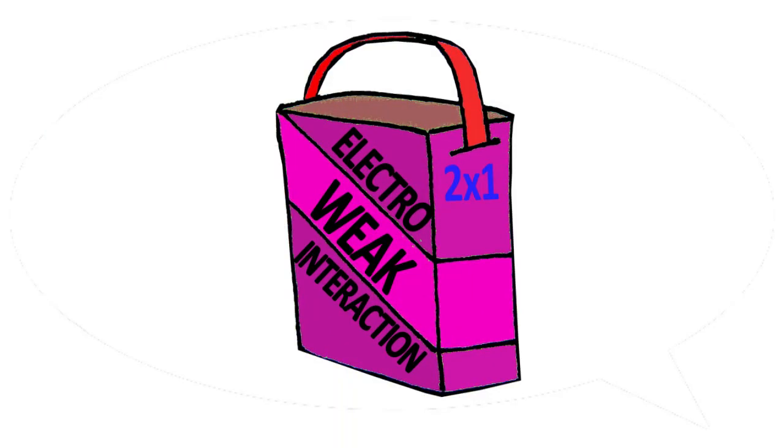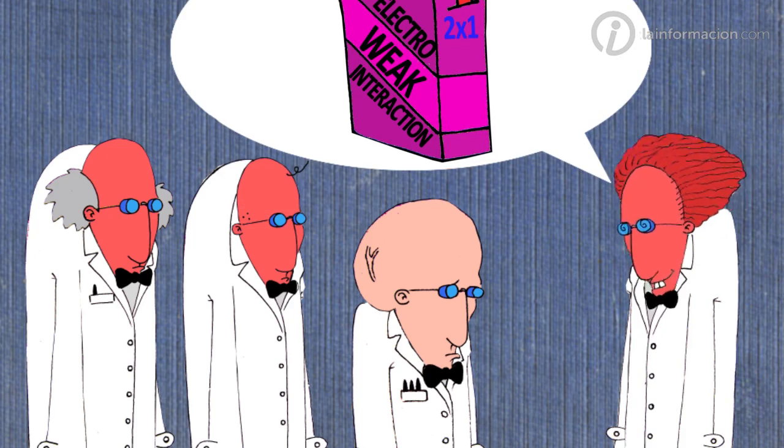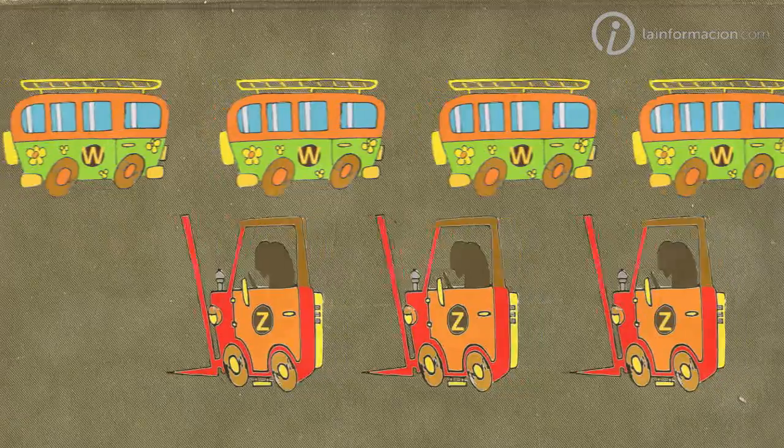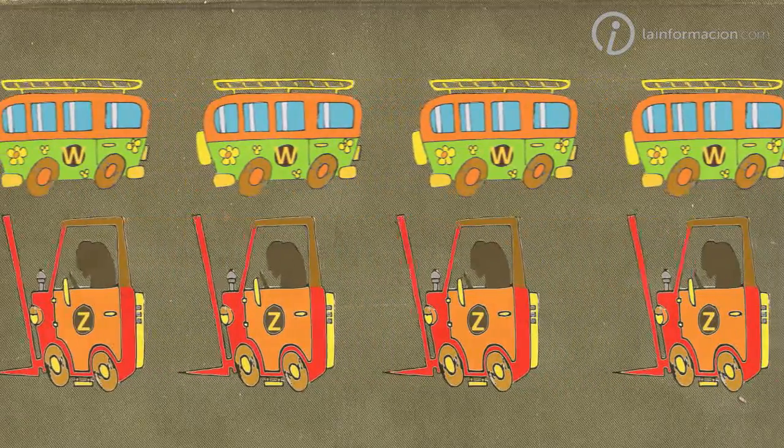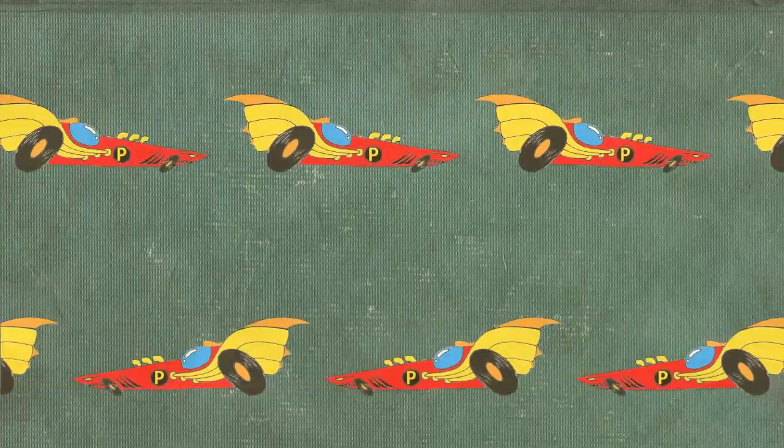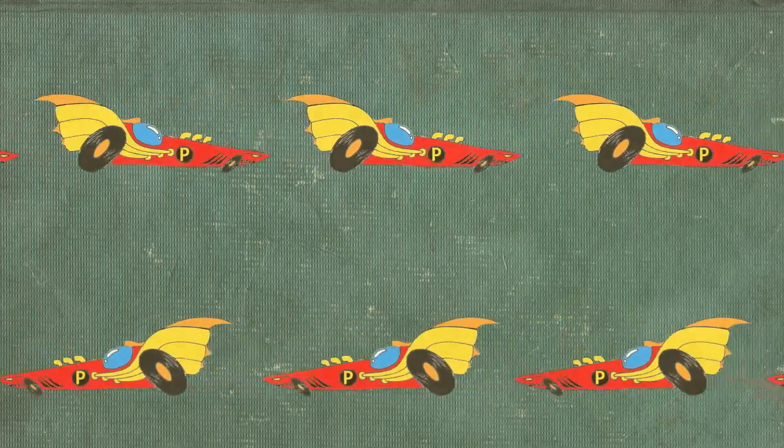But something didn't quite fit yet. As far as we know, weak nuclear force consists of the exchange between two particles, W and Z bosons, which have a big mass. On the other hand, electromagnetism is an exchange between photons, which have no mass at all.